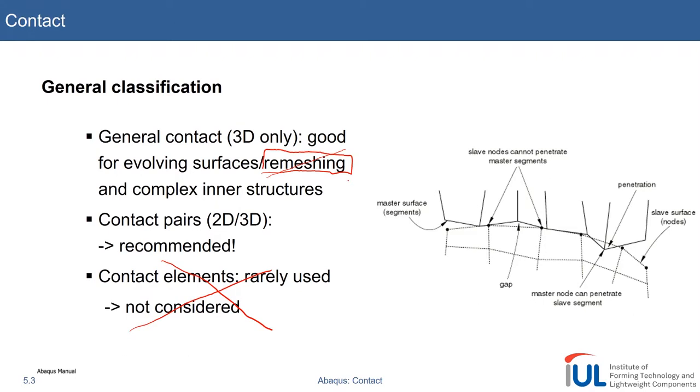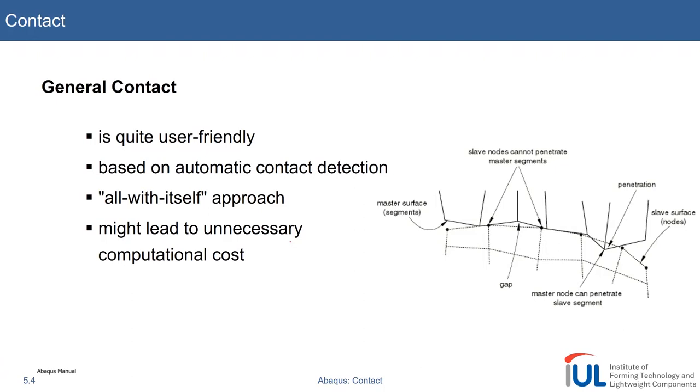However, in metal forming we tend to use contact pairs where you manually define what's going on. The general contact is super user friendly—you basically just click one button and the contact is perfectly dealt with. Abaqus will use an automatic approach to detect which surfaces will most likely get in contact. In the worst case, it's a straightforward all-with-all or by-itself approach, so every surface is a potential master or slave to all the other surfaces.